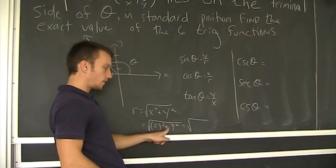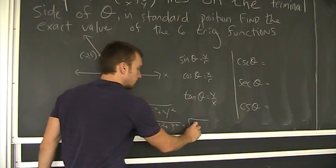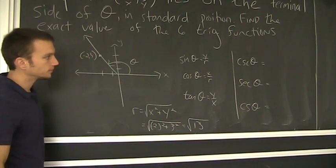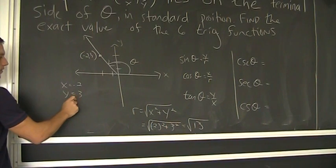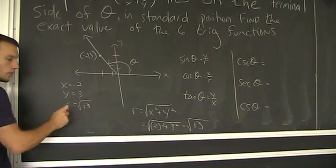Or as the square root of 4 plus 9, which is 13. Okay? So, x negative 2, y 3, r root 13.